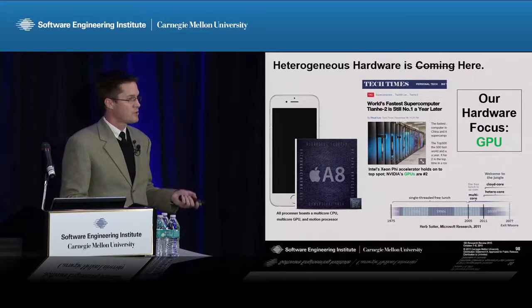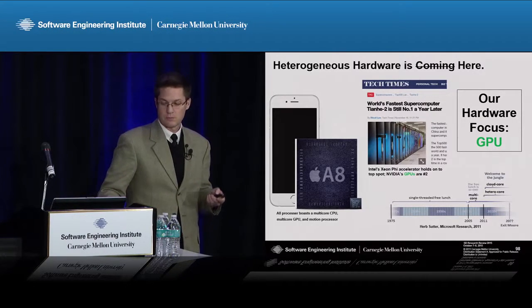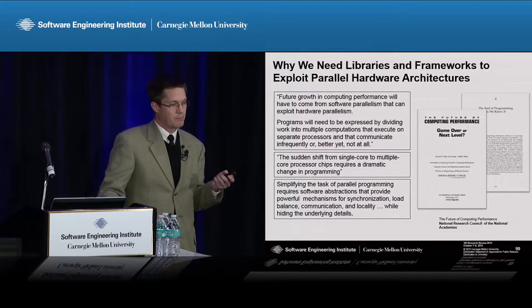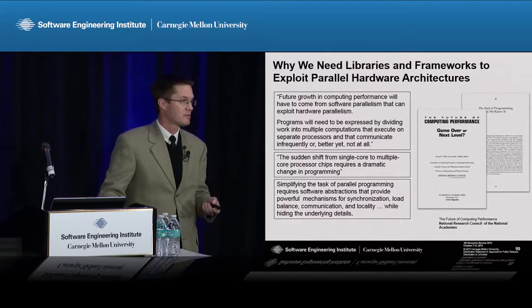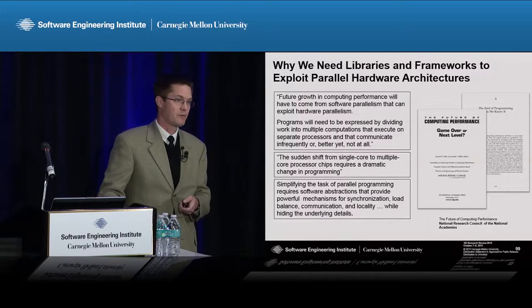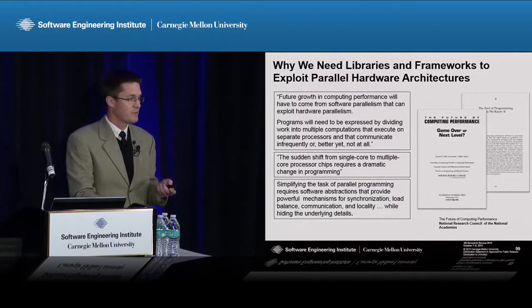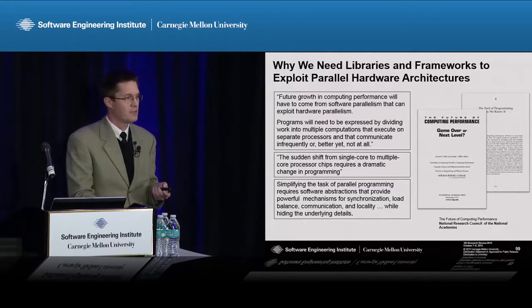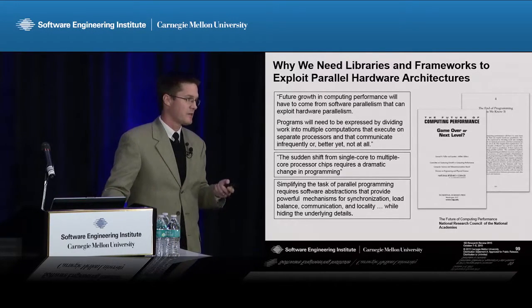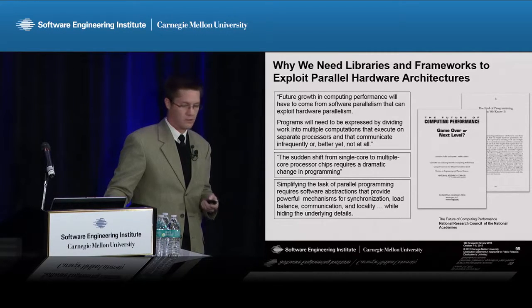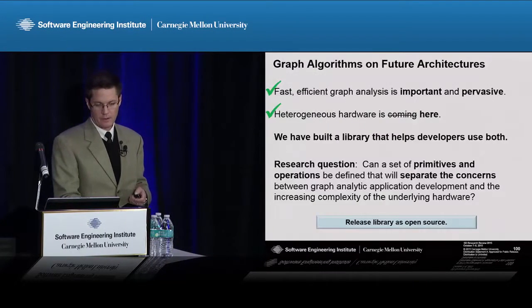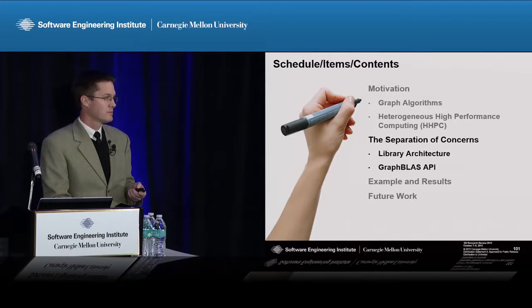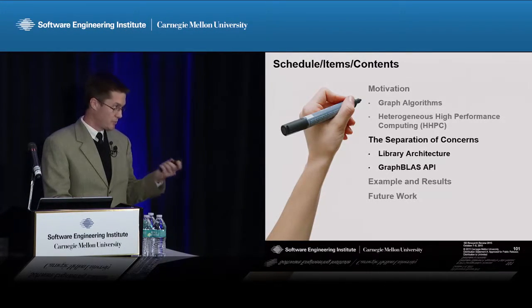Our focus in this work has been with GPUs. Performance today is achieved with parallelism, and parallelism is a different kind of programming. Another NRC report says that you need software abstractions to help with this programmability hurdle. So let's talk about the development of a library that helps with both of these.